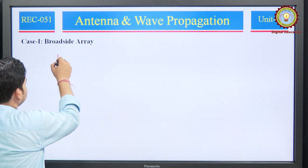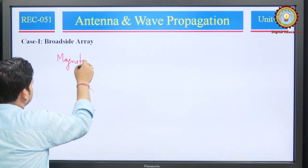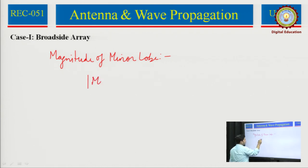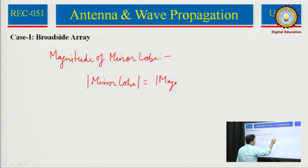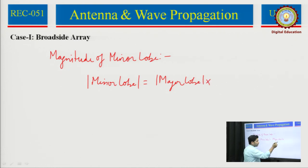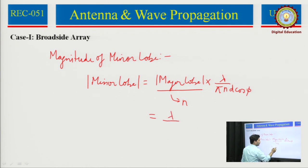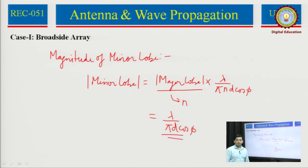The magnitude of the minor lobe is: minor lobe = major lobe * lambda / (pi*n*d*cos(phi)). The major lobe magnitude is n, so n cancels, giving: magnitude of minor lobe = lambda / (pi*d*cos(phi)).